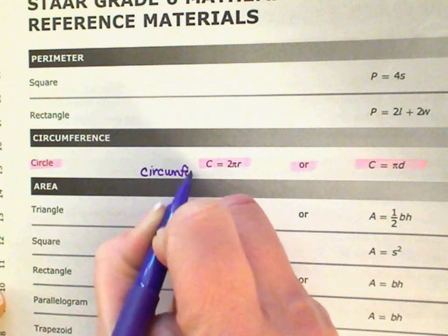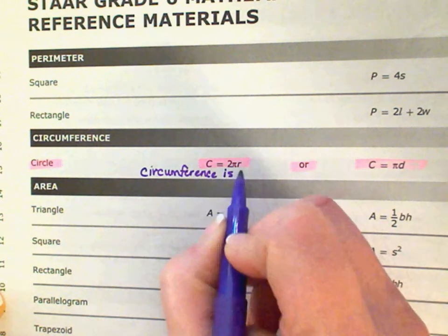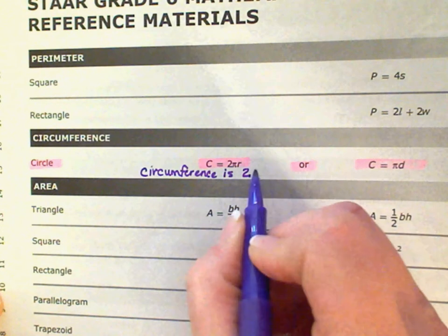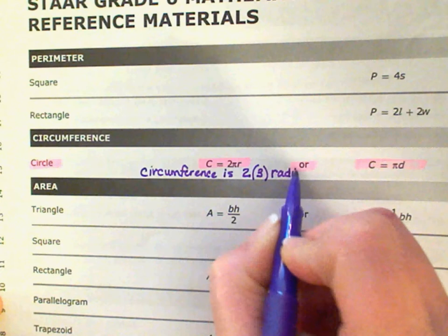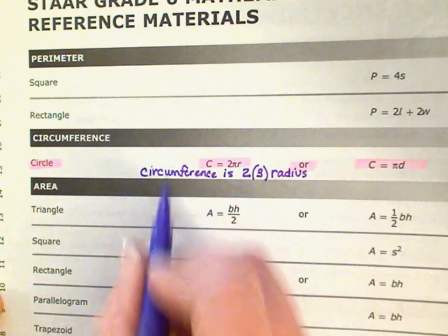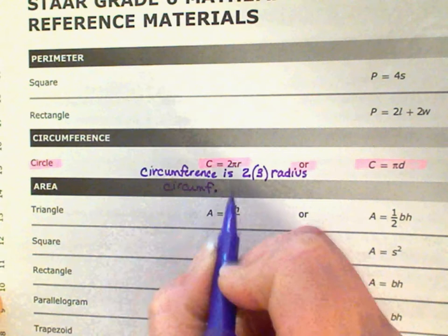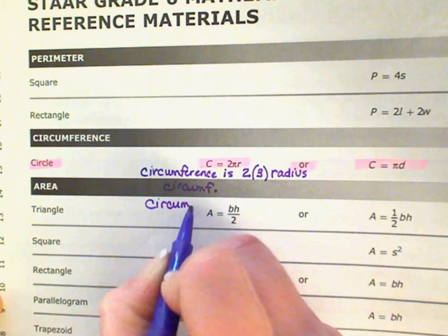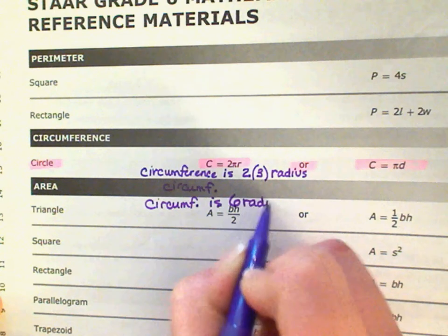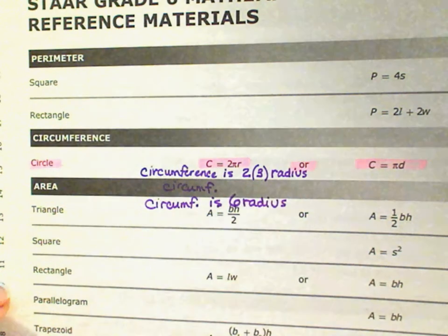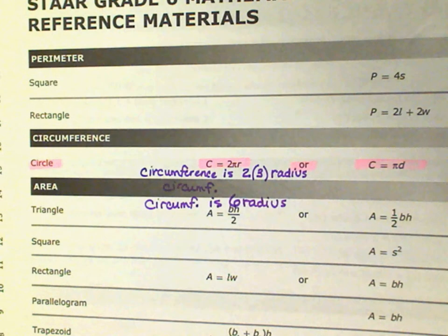The first step is to know what all these letters mean. C stands for circumference. 2 pi — remember we're using the value of 3, rounded. R is radius.